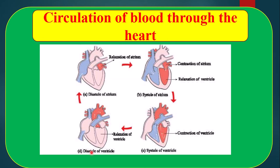Picture number D — Diastole of ventricle, that means relaxation of ventricle. At that time, both semilunar valves will close and bicuspid and tricuspid valves will open. So, deoxygenated blood enters into the right ventricle and oxygenated blood enters into the left ventricle. These four steps combinedly help to circulate the blood in our body.